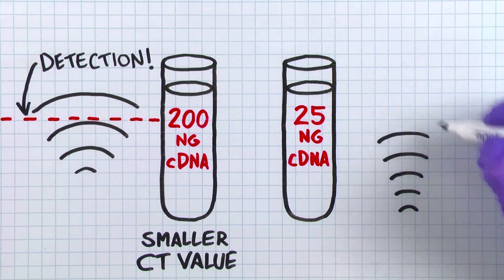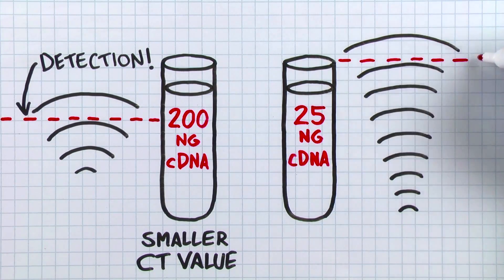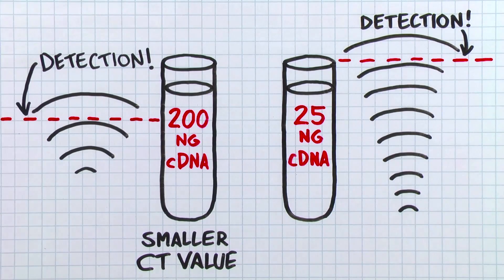The second sample, since it's starting from less template, only an eighth as much, will take more cycles to reach the same level of detectable fluorescence.